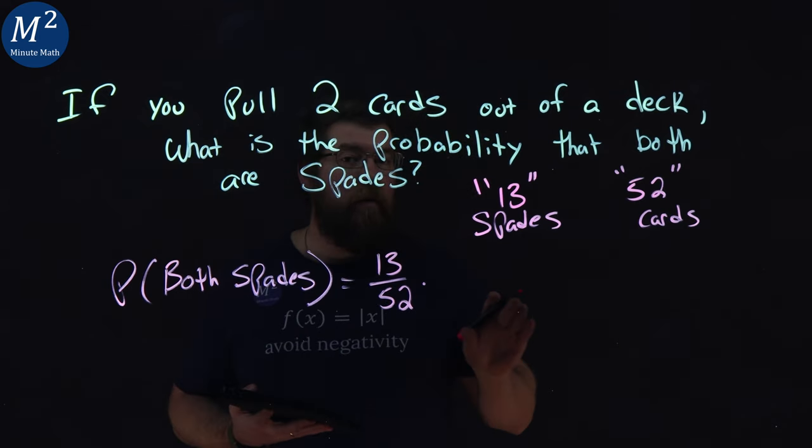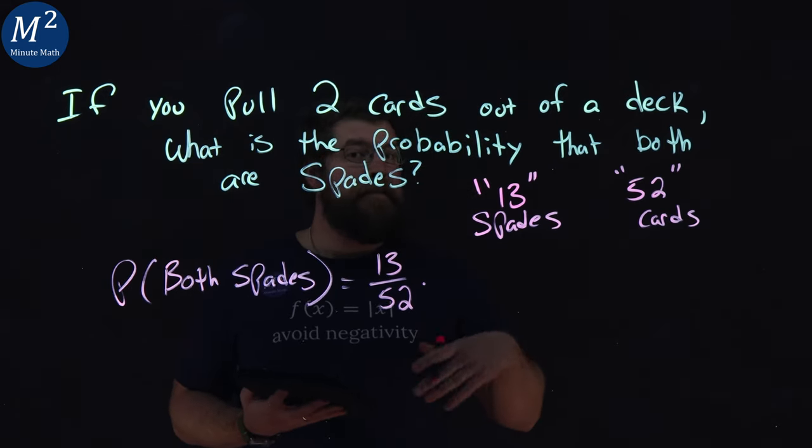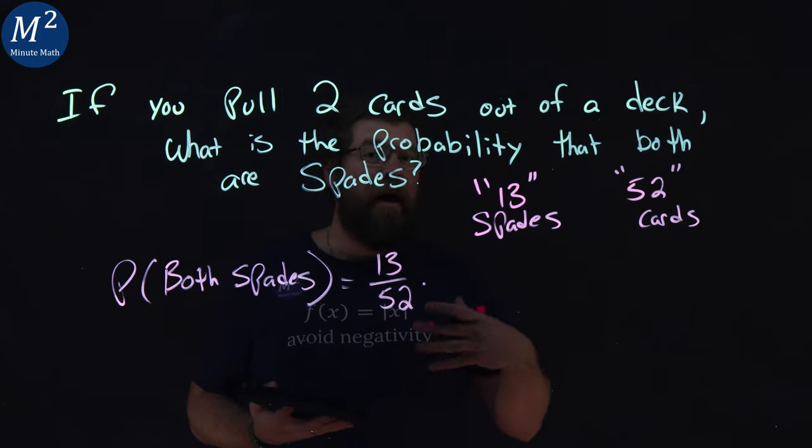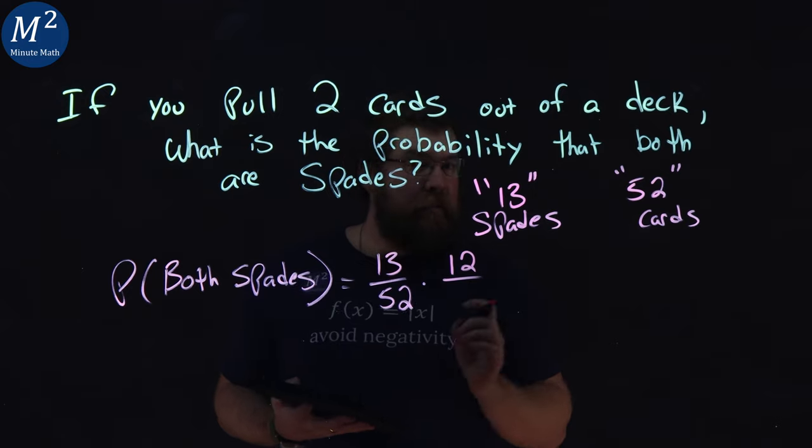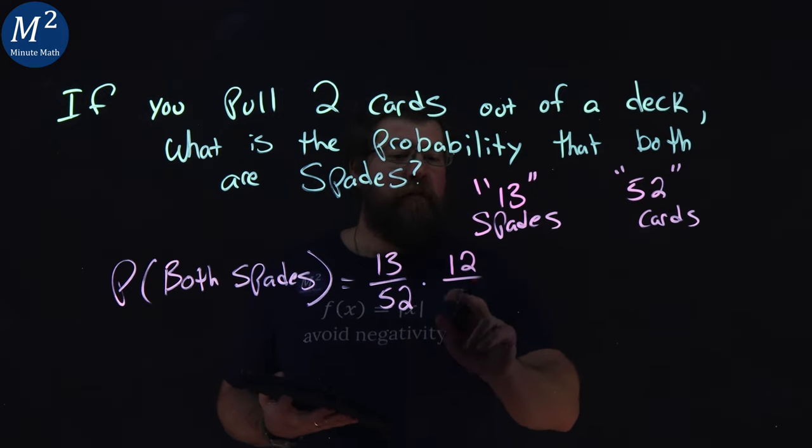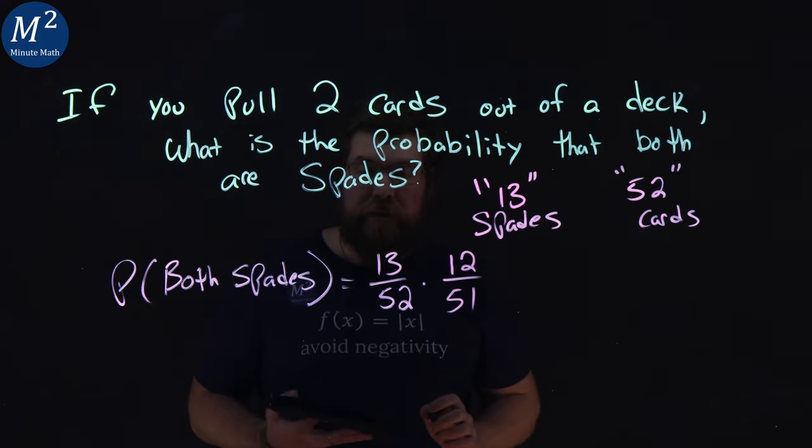Remember, once the first card is drawn, that is a spade for our probability, there are one less spades in the deck. There are 12 spades left in the deck out of a total of 51 cards in the deck.